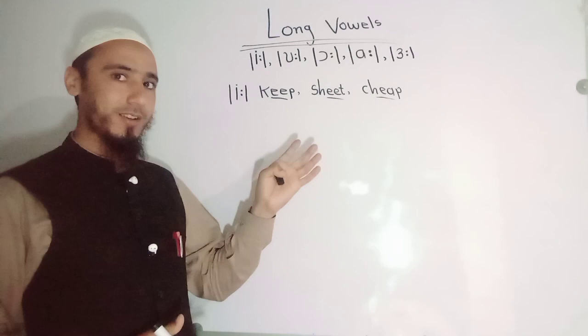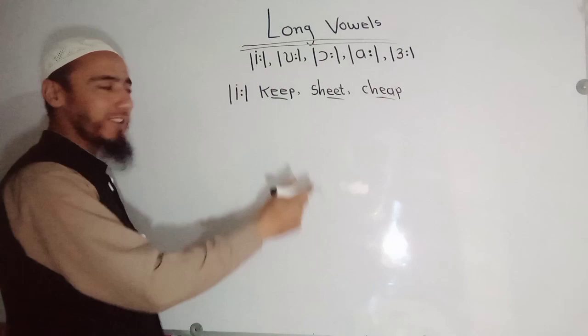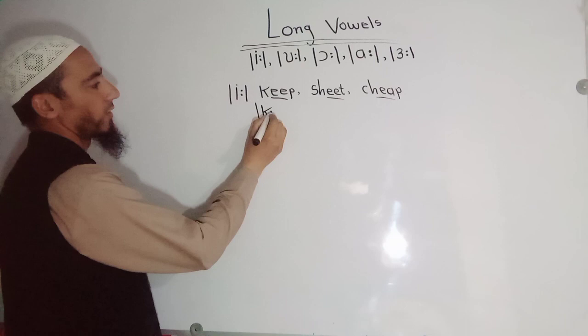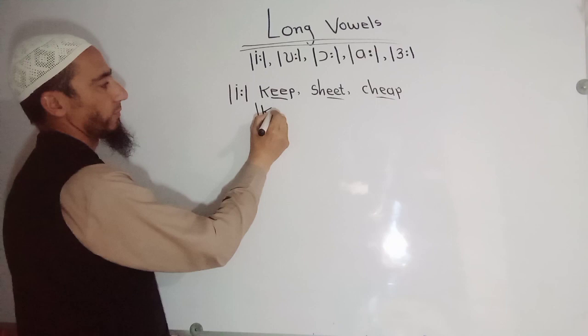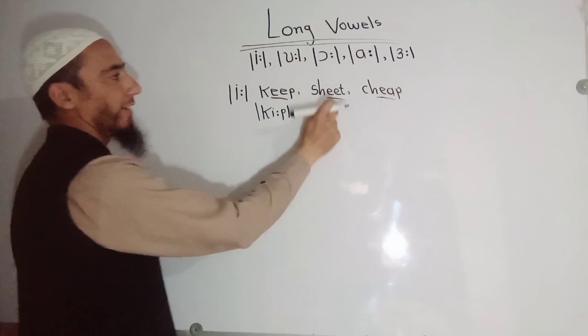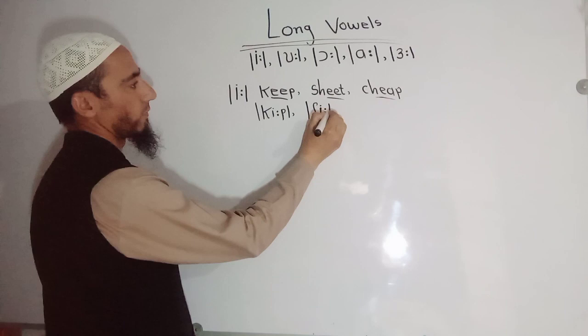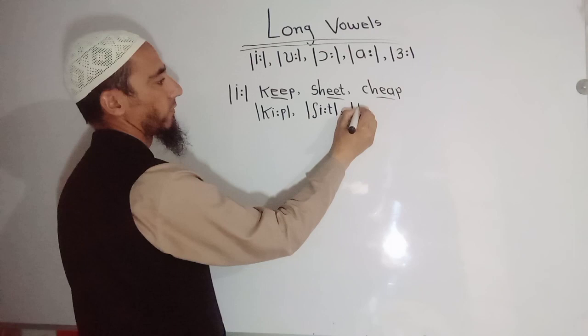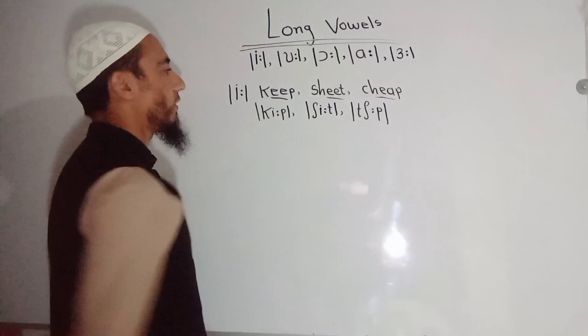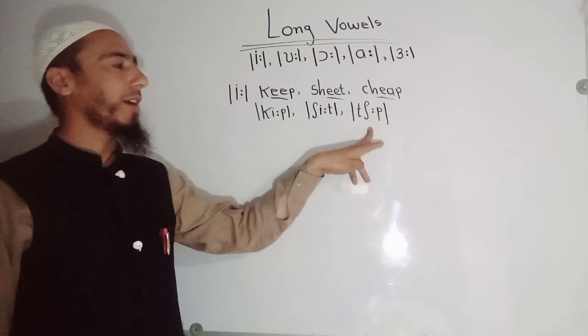Let's come back and change these words. For 'keep,' you write it using the long vowel E: symbol. Keep. Now let me change 'sheet' — sheet is written using the same long E: symbol. Sheet. And 'chief' — chief. Now reflect with me: keep, sheet, and chief all use the long E: symbol in their phonetic transcription.